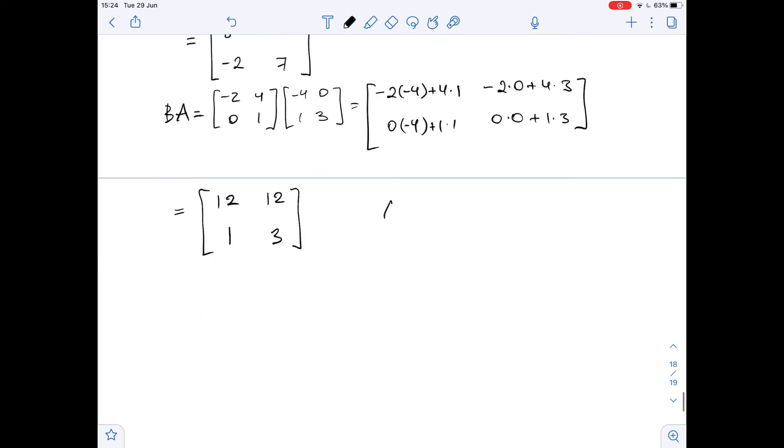So, as you can see, AB does not equal BA and does not equal identity matrix. So, B is not a multiplicative inverse of A.